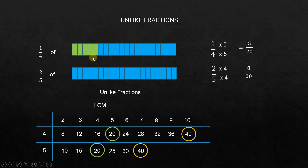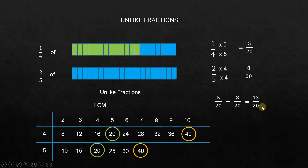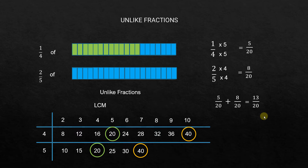So this is 5 out of 20, and we add 8 out of 20. That gives us 13 out of 20. It is still less than one whole, since one whole is 20 out of 20. We first took 5 out of 20 and then added 8 out of 20 to get 13 out of 20.